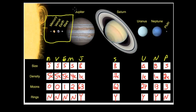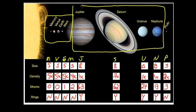Then we would have the next four. Those are large, they're gaseous, they don't have rocky surfaces, they have many moons, and they have rings. And then, all by itself, we have Pluto in the end of a class by itself.